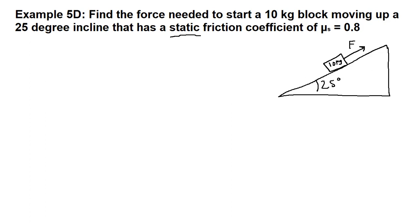When we draw our free body diagram, we know that we need to have an angled coordinate system. But we also know that gravity itself is straight down. So the force of gravity is mg, in this case 10 times 9.8, so that's 98 newtons.